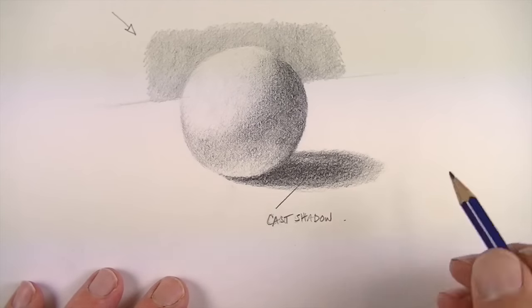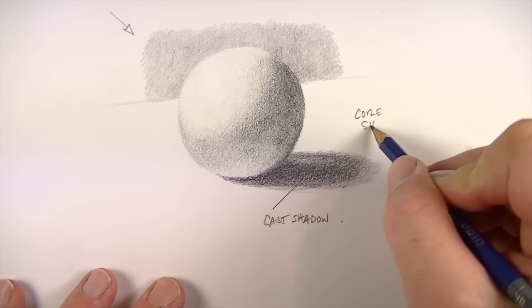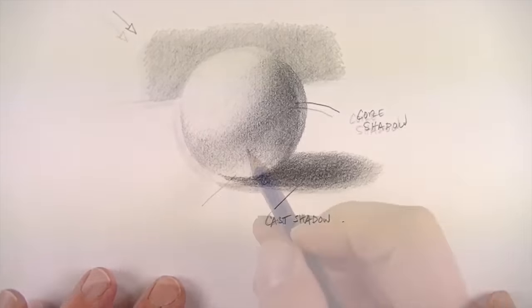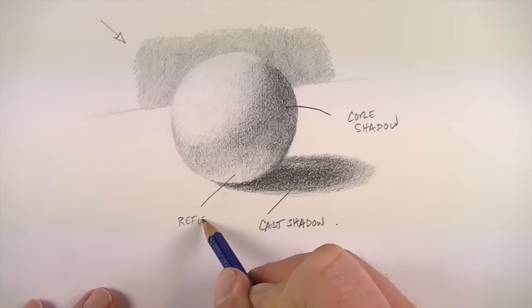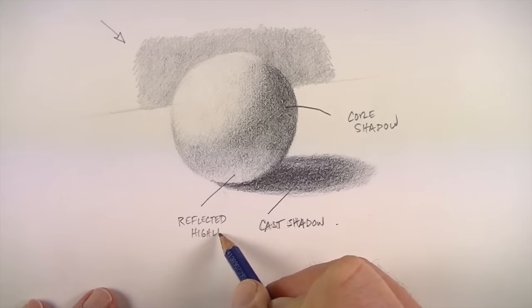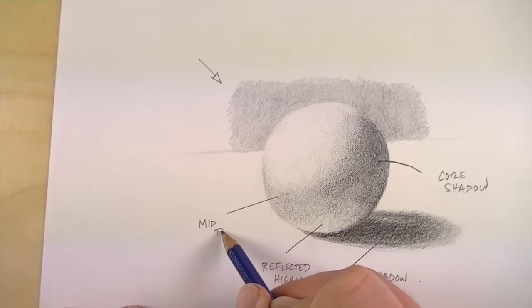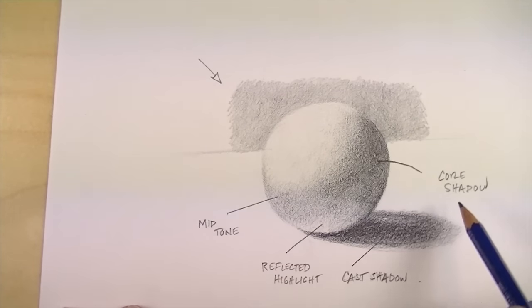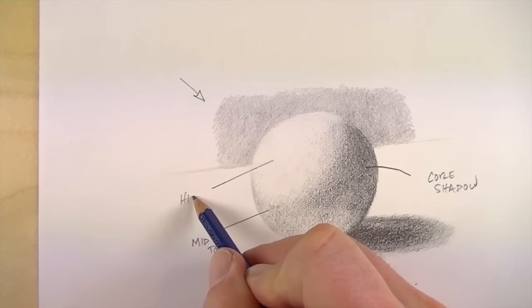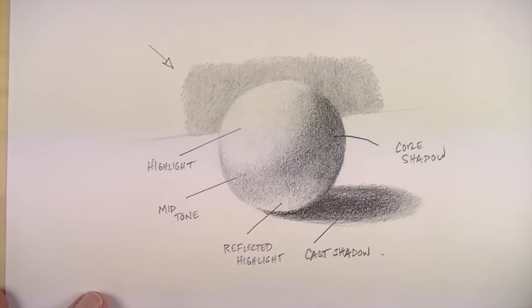So now we have our locations of value in place. We have the area of cast shadow underneath the sphere. We have the area of core shadow where it's the darkest value on the object. And then we have the reflected highlight where light is bouncing off of the surface of the table back onto the underside of the sphere. And then we have the area of midtone or middle value around the center portion of the sphere. And then, of course, we have the area where the light is hitting the strongest, which of course is the highlight. And now our drawing of a sphere is complete.